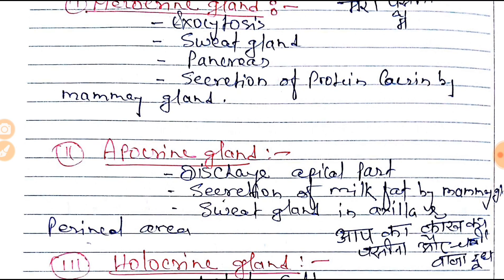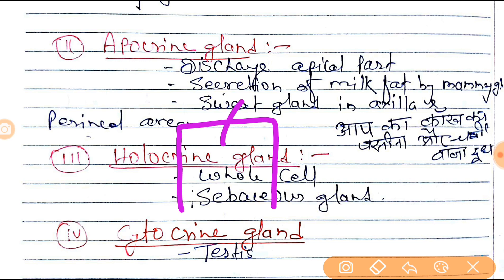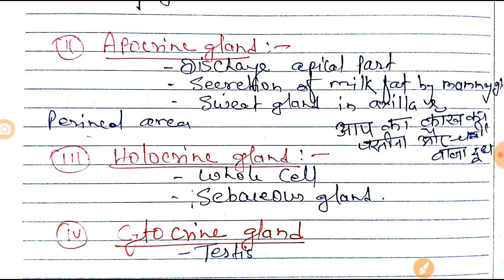Next is the apocrine gland. In the apocrine gland, secretion is from the apical part — if you make a diagram of the gland, secretion comes from the apical part. Examples are secretion of milk fat by the mammary gland, and sweat glands in the axilla and perineal region. Note that the regular sweat gland is a merocrine gland, while sweat glands in the axilla and perineal region are apocrine glands.